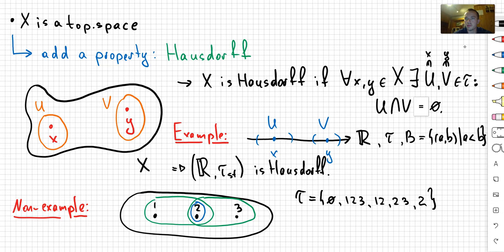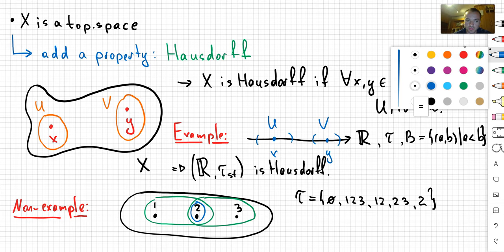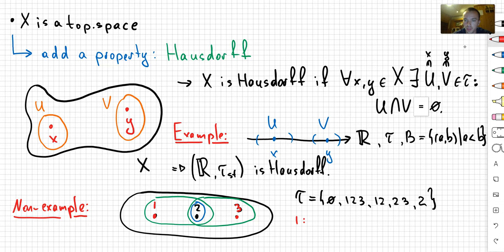And then why is this space not going to be Hausdorff? Because for example let's choose point 1 and point 3. You can see that 1 is contained in the following open sets: {1,2,3} and {1,2}. And 3 is contained in the following open sets: also {1,2,3} and {2,3}.